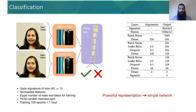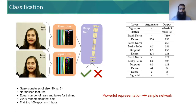We feed the gaze signatures into a simple three-layer network, documented on the right. We have the advantage of training a simple network due to the powerful representations we generate with gaze signatures. We train and test on equal numbers of real and fake sequences with a random 70-30 train and testing split. We refer to our paper for cross-fold validation experiments with different splits.